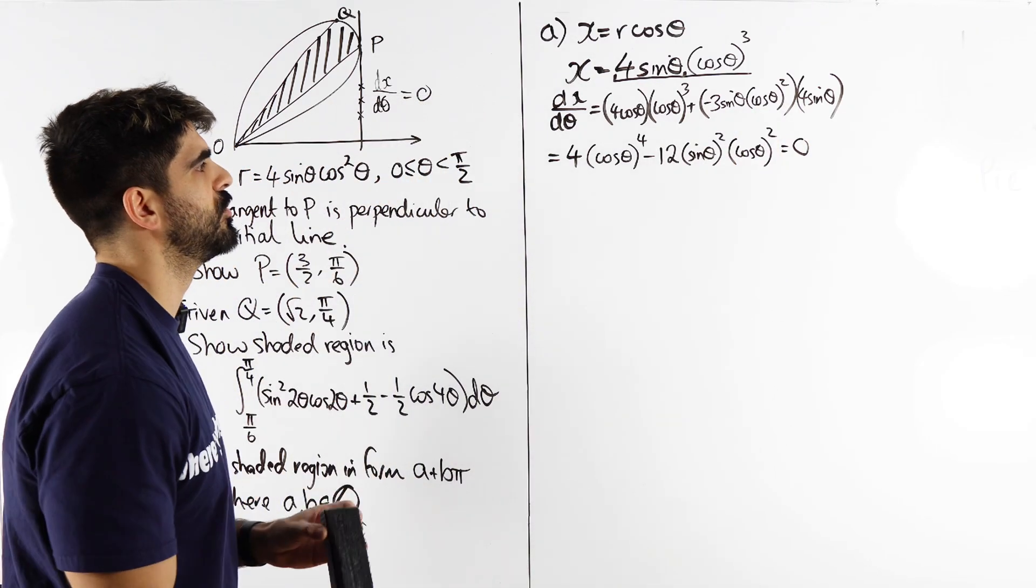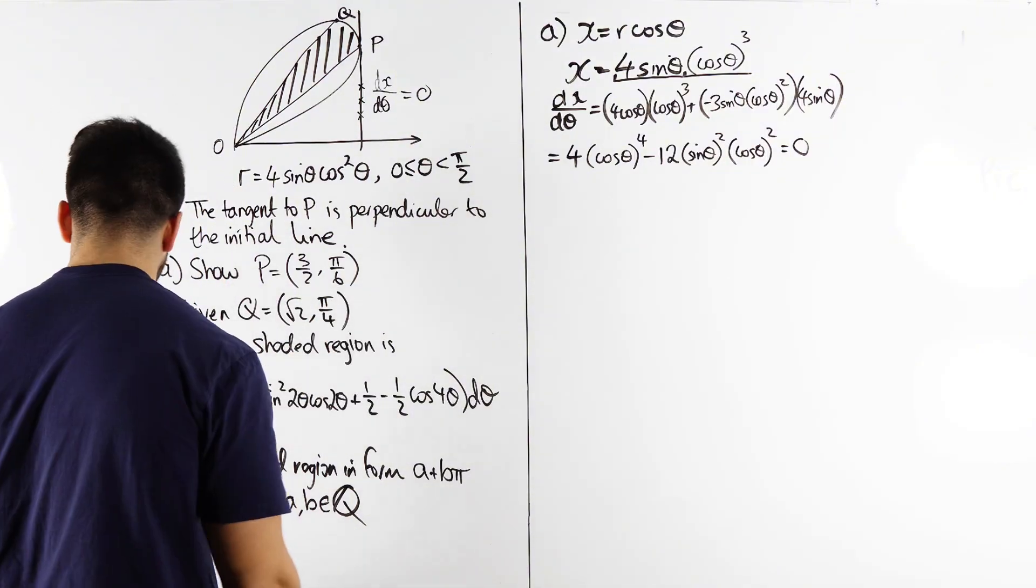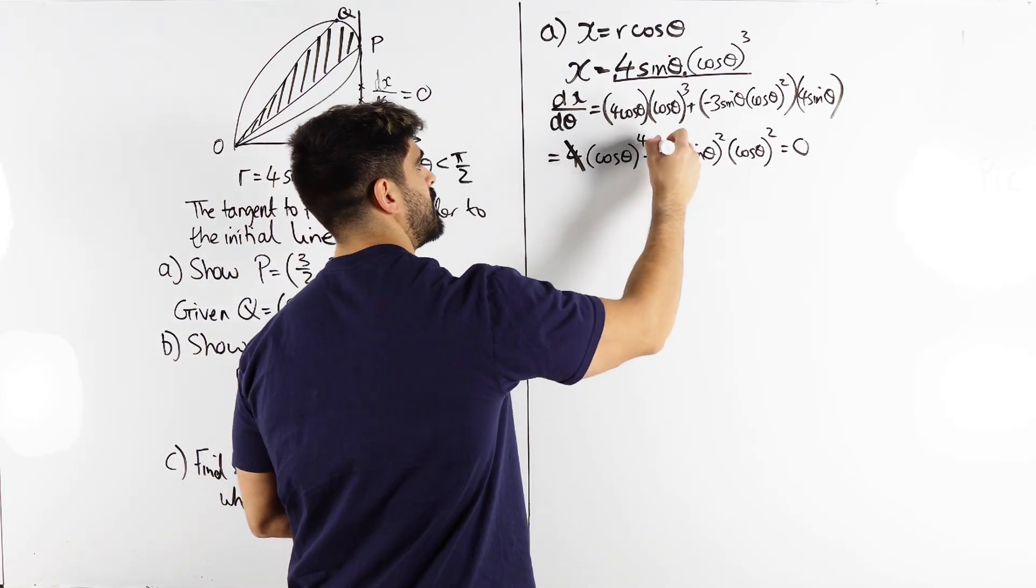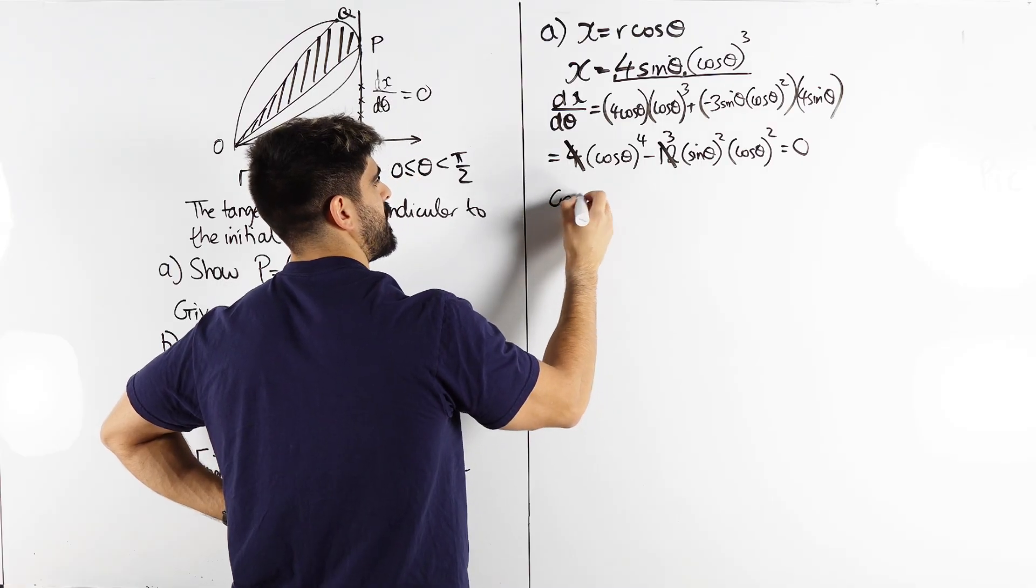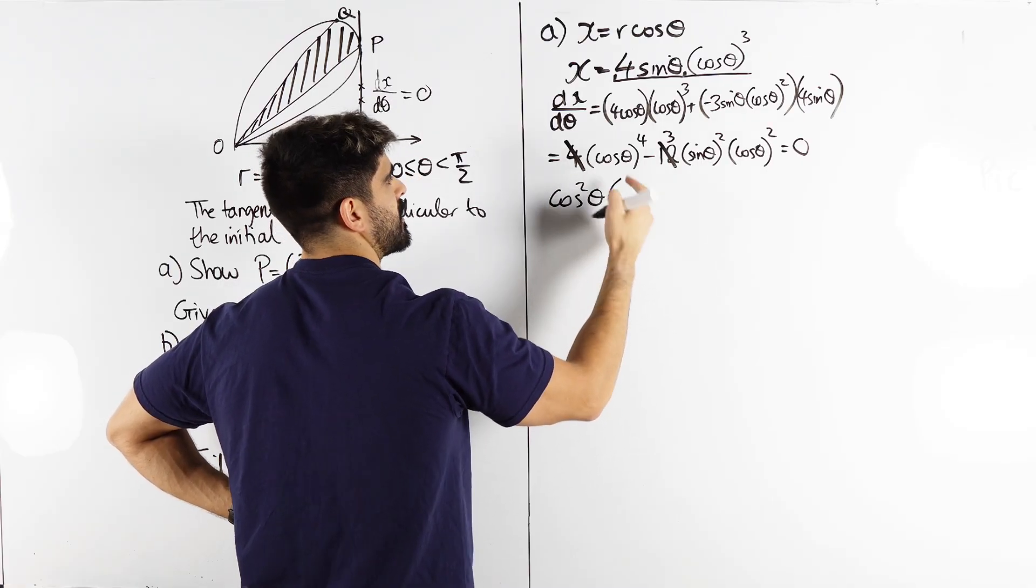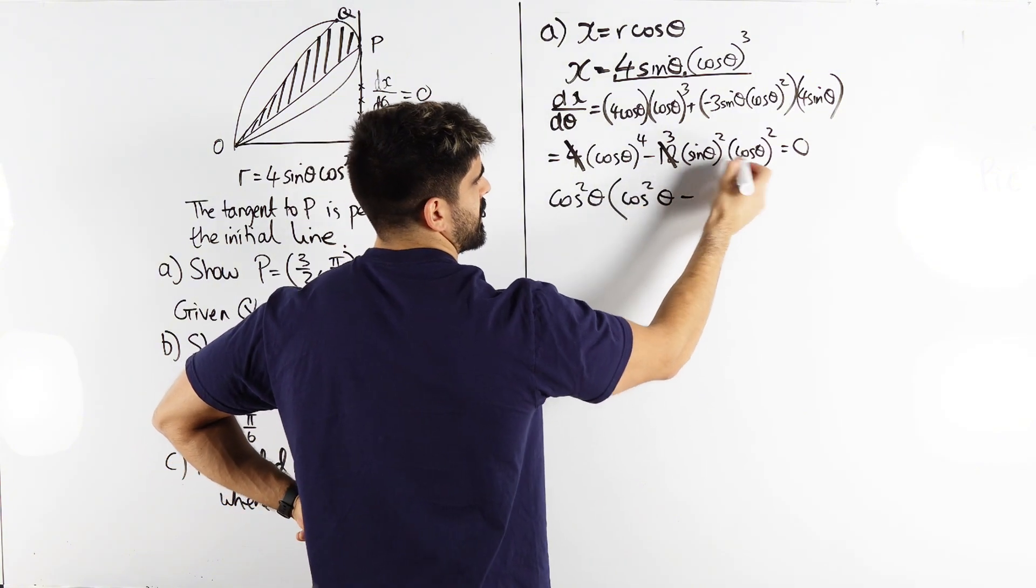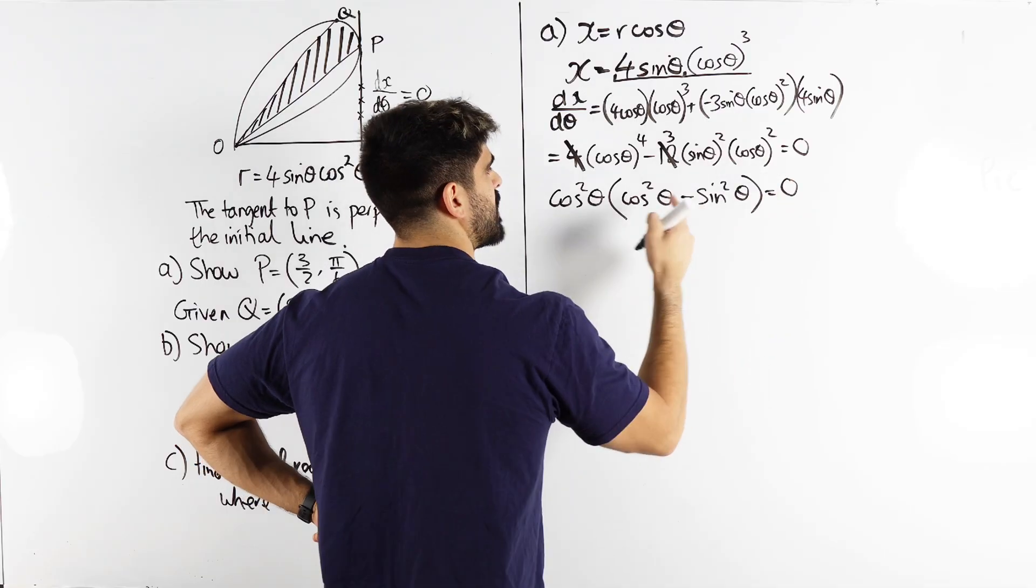So we're going to have to prove that that gives us pi over six. Now the first thing I notice we can divide through by four. Make that three. But cos squared I can factorize that out. So I'm going to write back like this cos squared theta. This will become cos squared theta minus that would go sine squared theta. Which is nice.